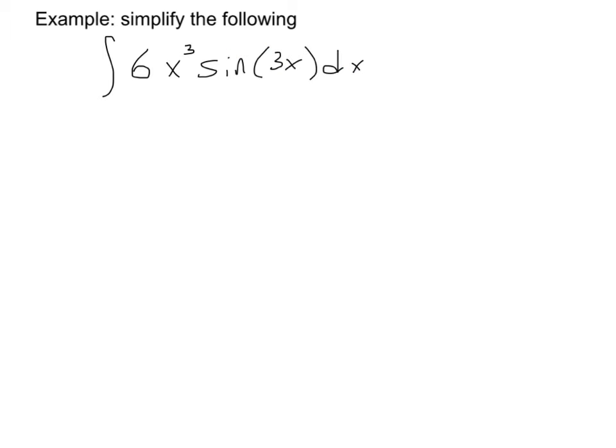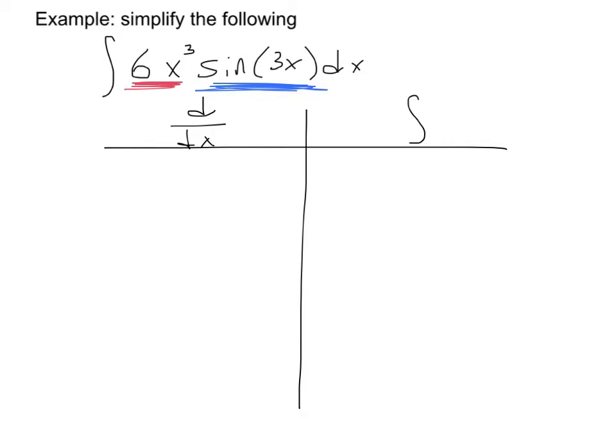So here it is. First, I have a high power of x, 6x cubed, and I have a function that I could integrate multiple times. So here's how tabular integration works. We make a table, because it's tabular integration. You make a table, and on one side you're going to take derivatives, and on the other side you're going to take antiderivatives. So I'm going to put 6x³ on this side, and I'm going to put the sine of 3x on this side.